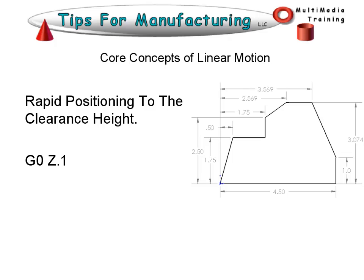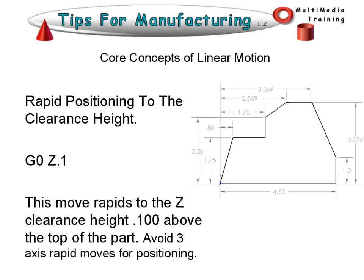Rapid positioning to the clearance height: G0, Z 0.1. This move rapids to the Z clearance height — 100 thousandths above the top of the part, which would normally be zero. We could have put this move together with the previous move, moving X, Y, and Z all at the same time, but I recommend avoiding three-axis rapid moves for positioning. This helps eliminate crashes from rapiding into a clamp sticking up. It's always better to move X and Y to position first, then Z down to your clearance height.